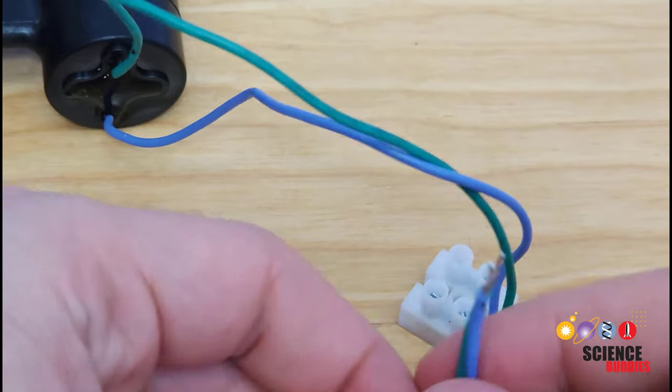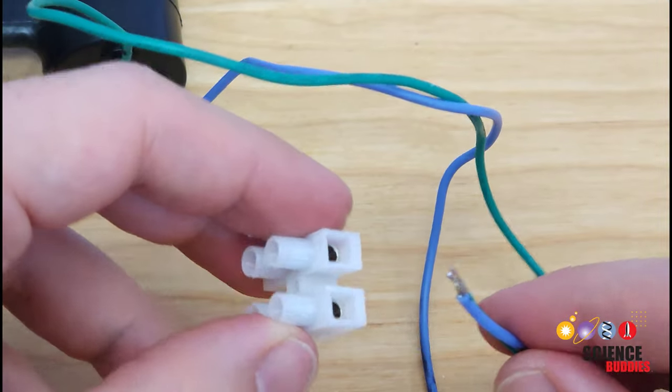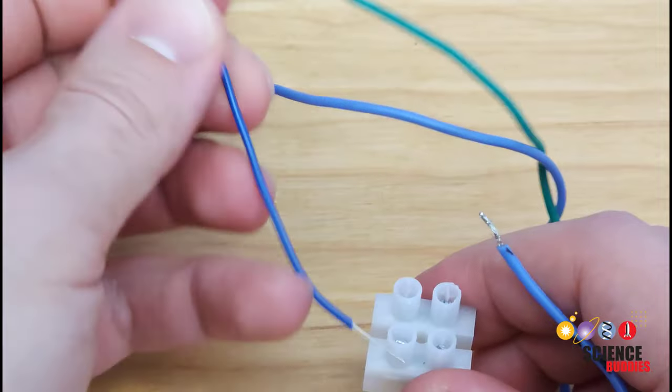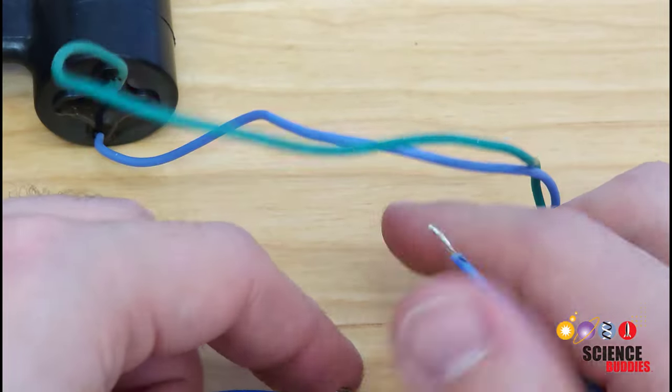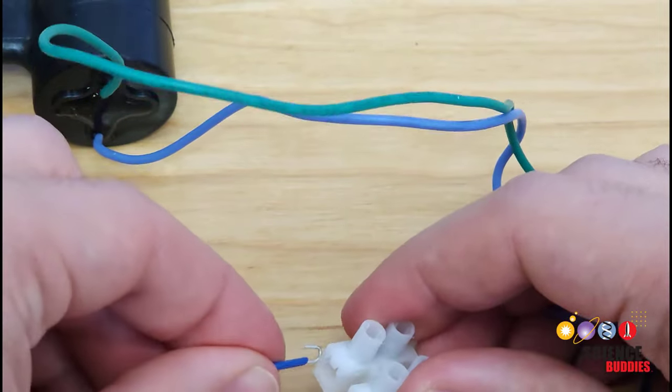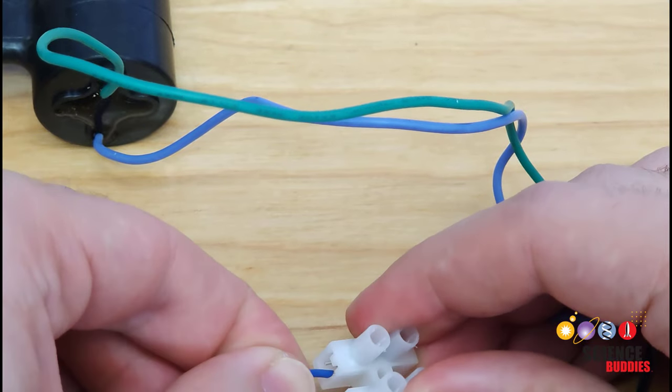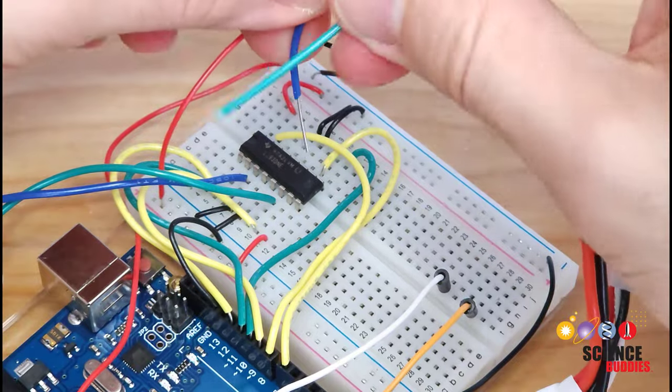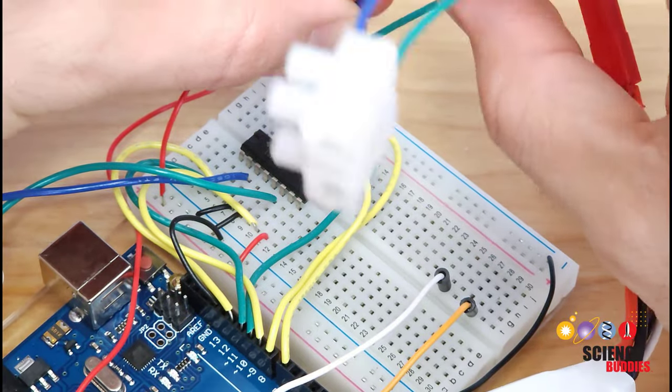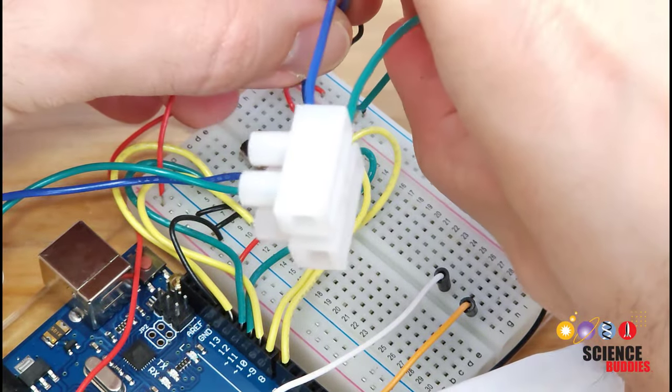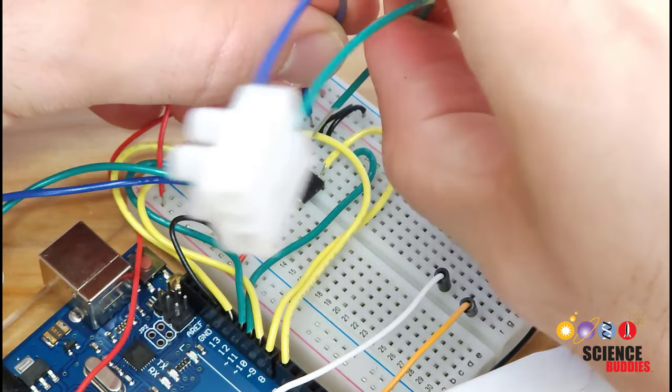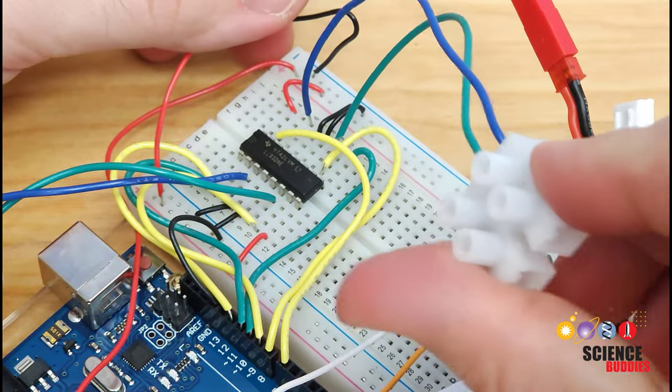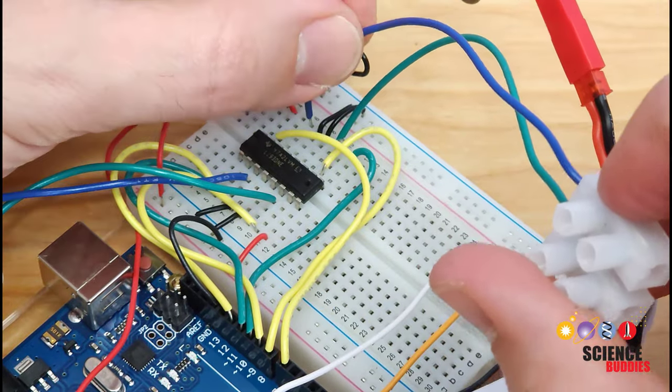Note that some of the thicker wires like those from the motors and the battery will be too big to fit into a typical solderless breadboard, so you can use other connectors like these screw terminals or spring clips to connect the thicker wires to 22 gauge jumper wires that will fit into the breadboard. I'm using a solderless breadboard to make prototyping easier in this project, but of course that is not as permanent or durable as a soldered circuit. So if you plan to use your ROV a lot or it might get bounced around in rough water, eventually you'll want to solder your connections instead.